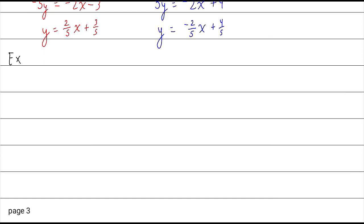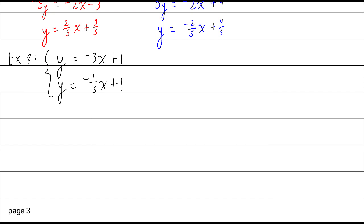Example 8: y = -3x + 1 and y = -1/3 x + 1. These are in slope-intercept form, so no rearranging needed. Slope one is -3, slope two is -1/3. These are reciprocals — that's 3/1 and 1/3 — but they're not opposite signs. So they're not perpendicular because the signs are the same, and the numbers themselves are not the same, so it's not parallel either. They are neither.